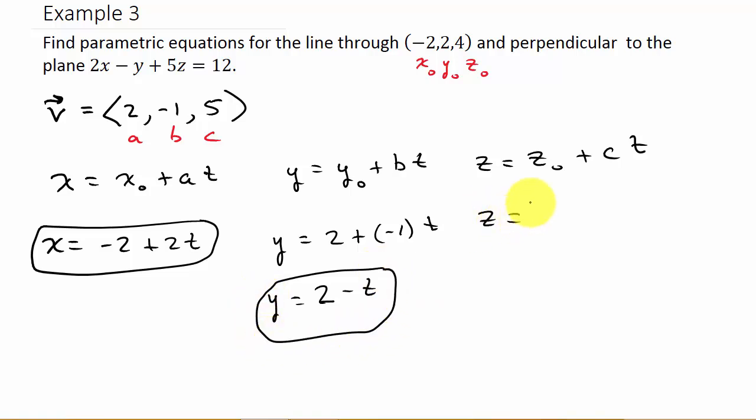And then z is z₀, which is 4, plus c. c is 5, so z = 4 + 5t.